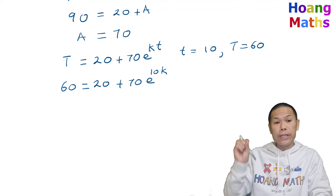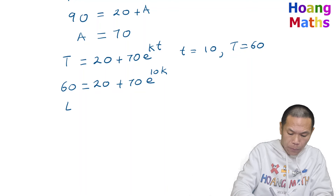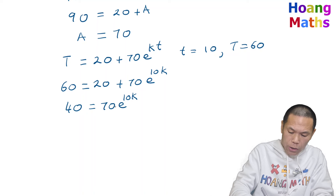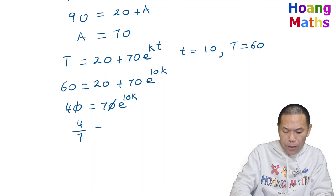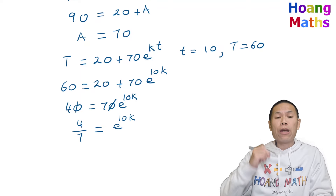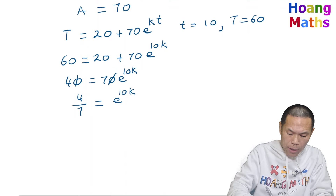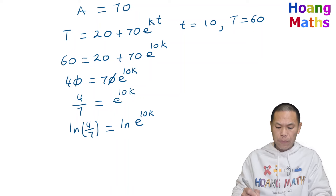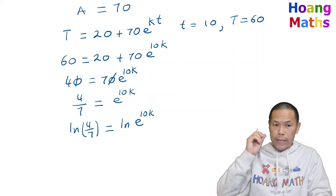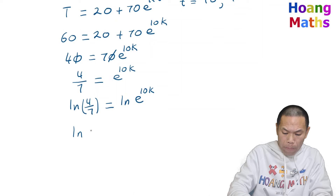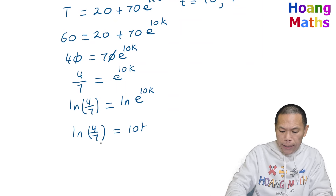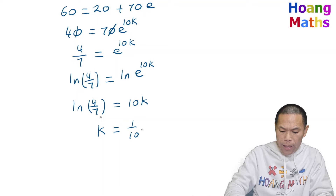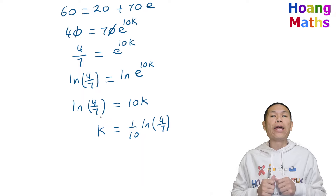Taking ln on both sides: ln(4/7) equals ln(e^(10k)), and ln(e^(10k)) equals 10k. So ln(4/7) equals 10k. Dividing both sides by 10: k equals (1/10)·ln(4/7). That is the value of k.